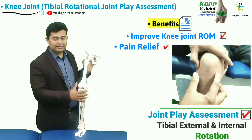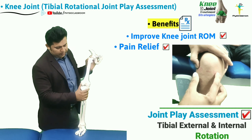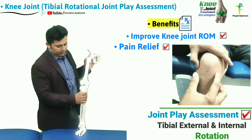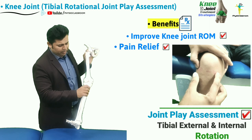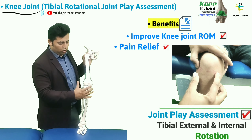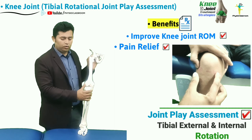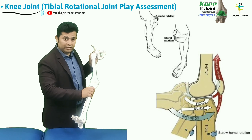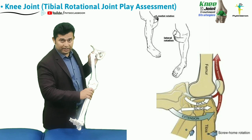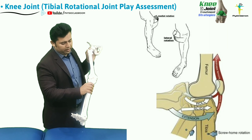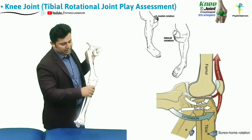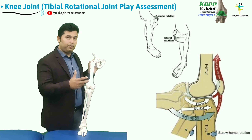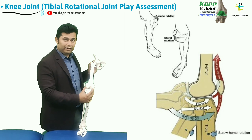In this video, we will be covering the clinical skills required to perform the joint play evaluation for tibial external rotation and tibial internal rotation over the femur. Tibial external rotation is important for locking the knee joint in the open kinematic chain, whereas the tibia should rotate medially or internally to unlock the knee joint in the open kinematic chain.